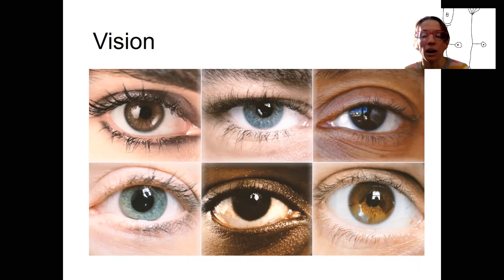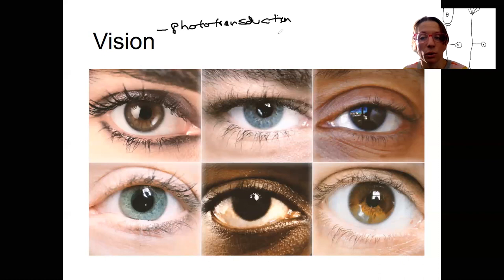So I want to use it as our example of a special sense to look into the detail of both sensory transduction. For vision, this is phototransduction. So using photoreceptors, but the eye uses much more than just photoreceptors to allow it to work well.